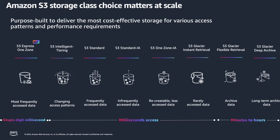Just to provide some context, the general rule of thumb is Amazon S3 Standard is a great storage class for objects accessed more than once per month. Then we have Amazon S3 Standard Infrequently Accessed, which is good for objects accessed around once per month. Then we have Amazon S3 Glacier Instant Retrieval, which is good for objects accessed once per quarter.